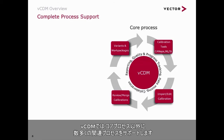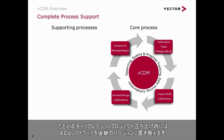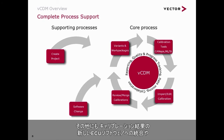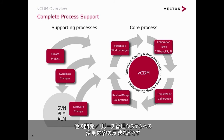Besides the core process, VCDM supports many related processes — for instance, the initial creation of a calibration project, replacing an ECU software with its successor while migrating calibrations to the new version, or transferring changes to other development and release management systems.